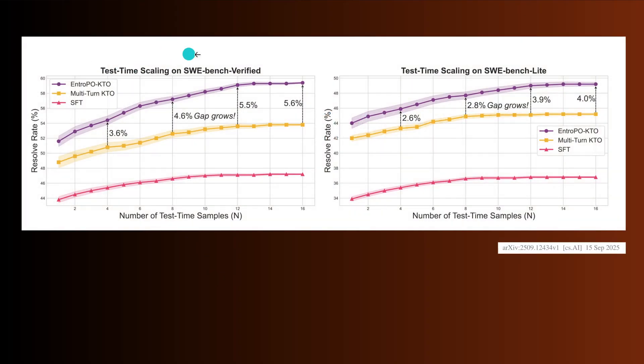Let's have a look at the benchmark at the evaluation. And here you see it. Test time scaling on software. SVE bench verified and SVE bench light. Look, the supervised fine tuning is this baseline. Here you see, OK, not really famous. And then multi-turn KTO we have in yellow. Yes, it gets better with this multi-turn training, but really nice if we add this entropy regularized term. So we do not restrict ourselves to a segmentation of the solution space, but we try to explore the complete solution space. Look at how much nicer our performance increases now. Almost 58, 59 percent.